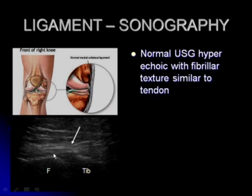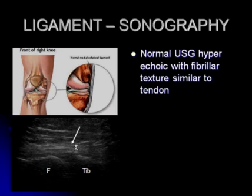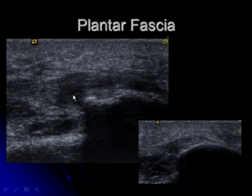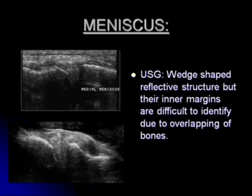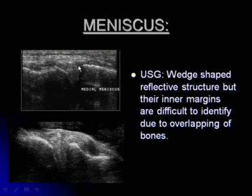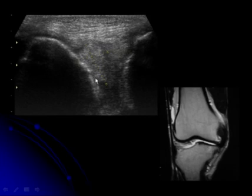Ultrasound can also look at ligaments. A ligament almost looks like a tendon with a normal hyperechoic appearance and fibrillar texture pattern. Here is an example showing the rupture of a collateral ligament at the knee joint with a hematoma. Here is a thick plantar fascia at its insertion — hypoechoic and thickened compared to the normal on the opposite side. This is a case of plantar fasciitis. Although MRI is the choice for diagnosing meniscal tears, in some rare cases, ultrasound can look at the meniscus at the peripheral part of the knee joint, and there is one case which showed a meniscal tear on ultrasound.